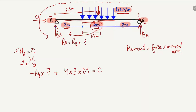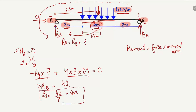Setting the summation of moments at point A equal to zero: minus RB times 7 plus 4 times 3 times 3.5 equals zero. Shifting the RB term to the right side gives 7RB equals 42. Dividing both sides by 7, RB equals 6 kN. So the reaction at point B is 6 kN.